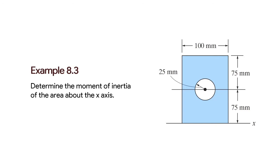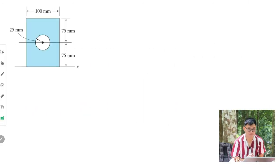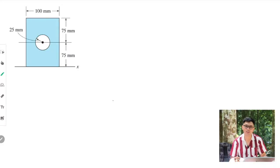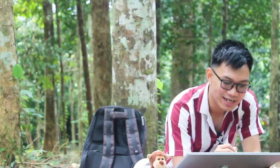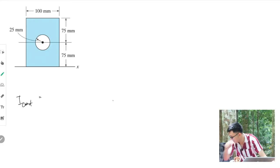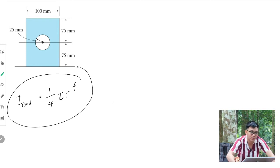So I have here a composite body. This body is composed of a rectangle and hollow circle inside. And the goal of this problem is to determine the moment of inertia of this composite body about the x-axis. By applying parallel axis theorem, to get your moment of inertia about the x-axis, let's start with the rectangle.